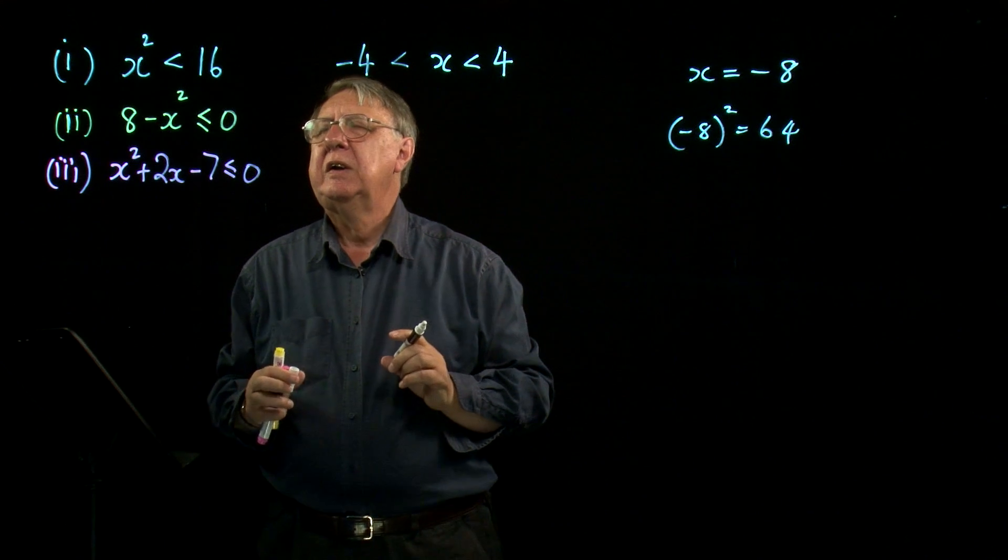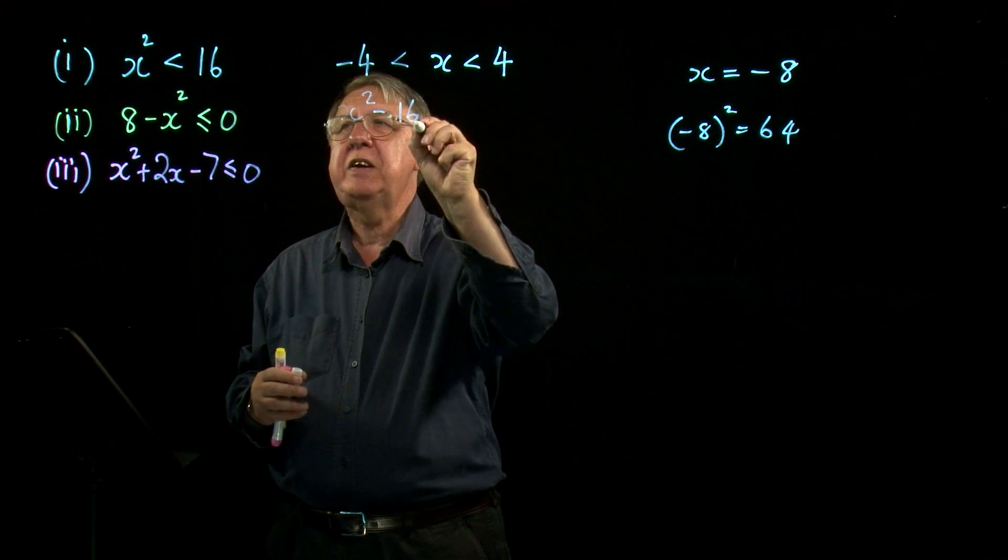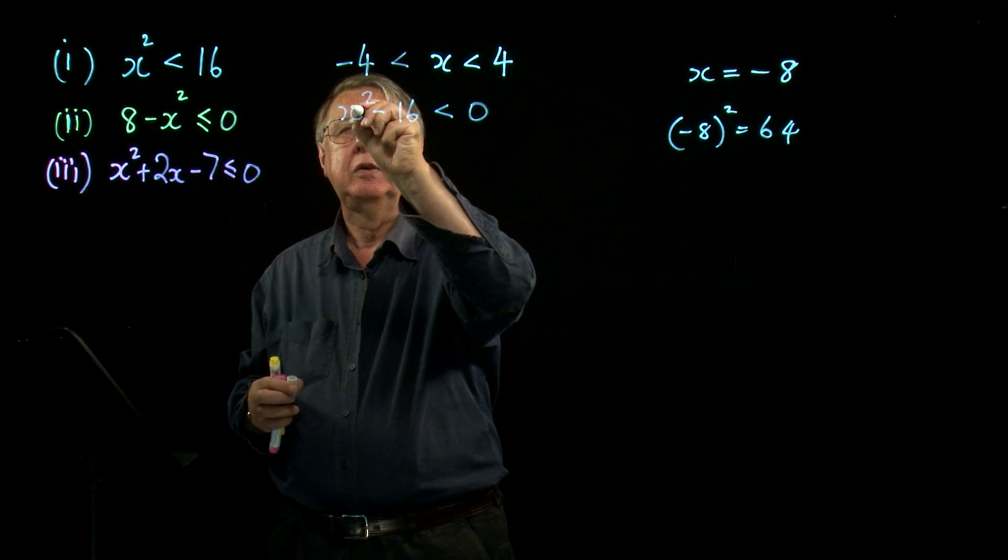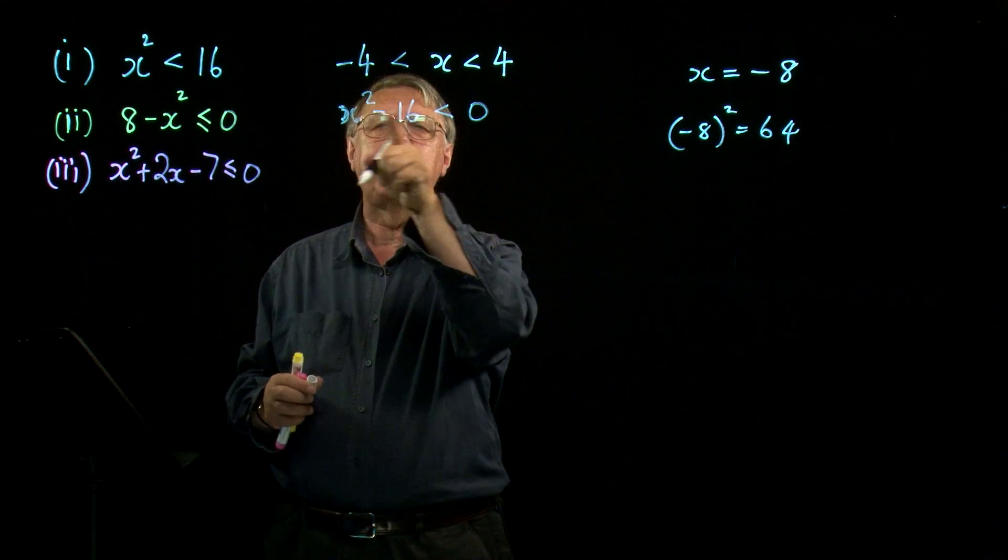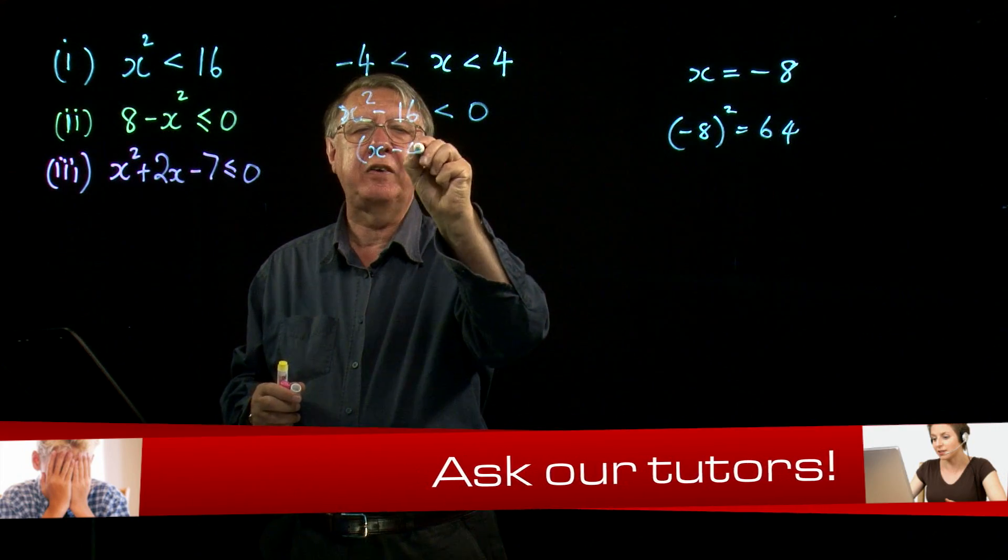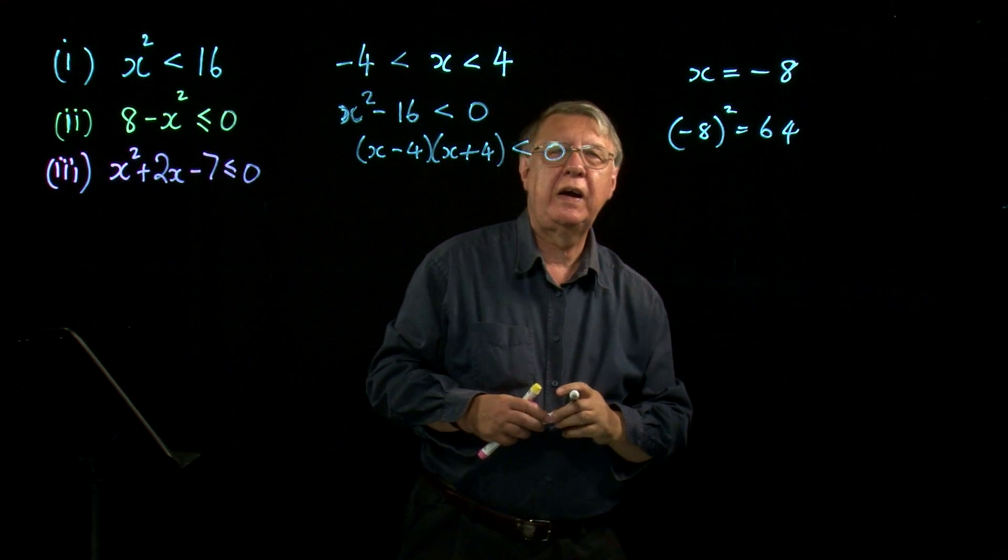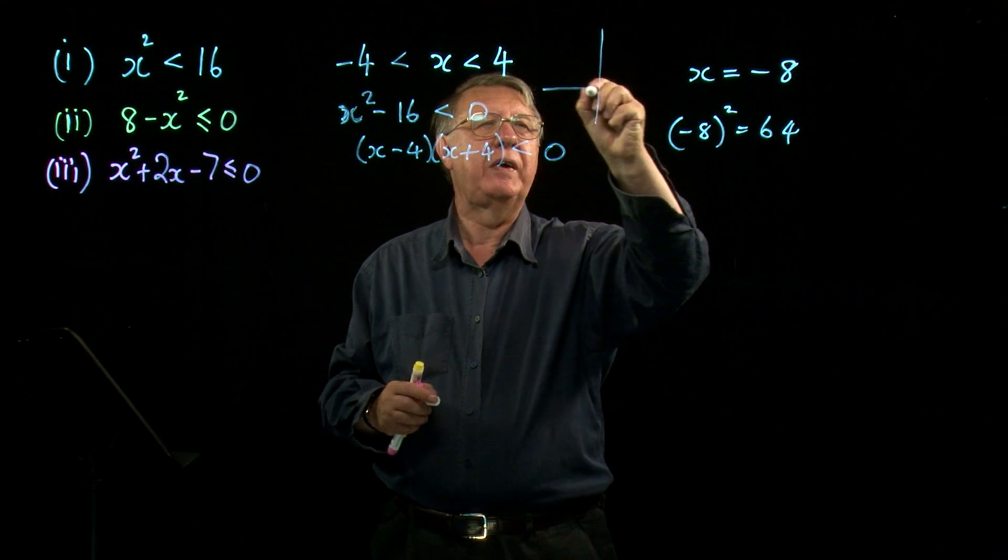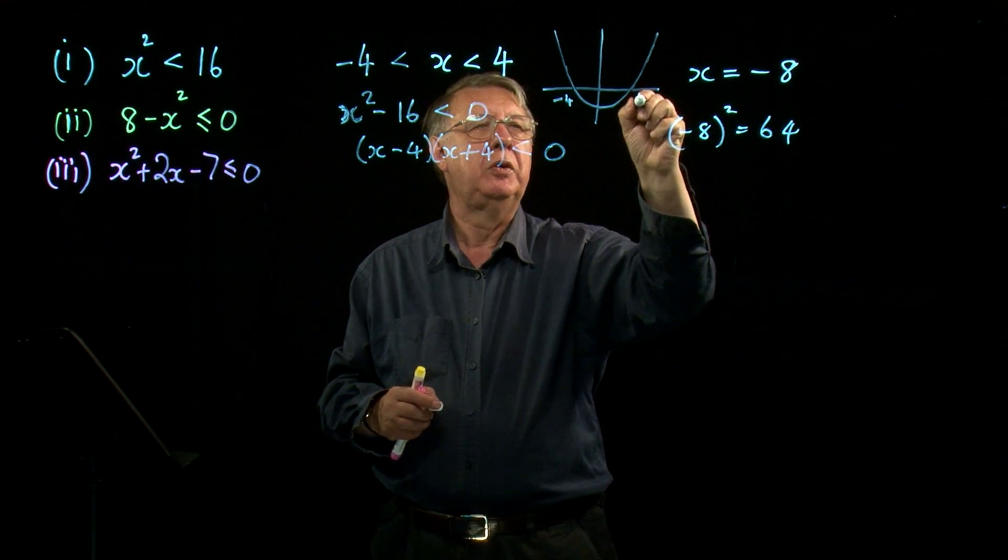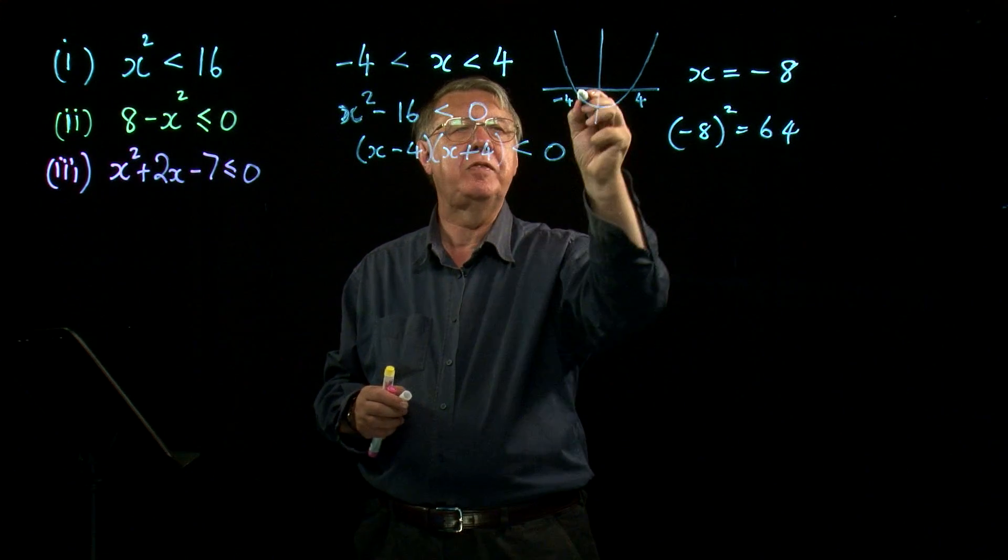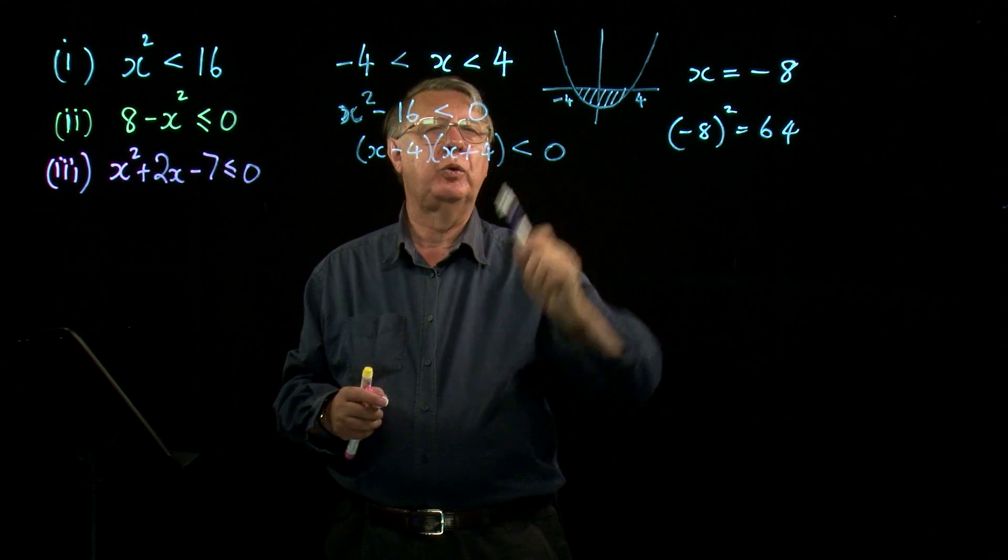Because otherwise you've got to start doing the full works on it. So in other words you've got to write that as x squared take 16, less than zero. Let's give the pen a shake, it's going to make it write a bit clearer. Now you have to look at that and say, oh I know what that is, it's a difference of two squares, so you have to factorise it like that. Then we'd be working with our graph, which would look something like that, between minus 4 and 4. And we'd be saying, we want the graph to be negative, so we want to be down here. And that gives us the negative 4 to 4, which is a little bit long, isn't it?